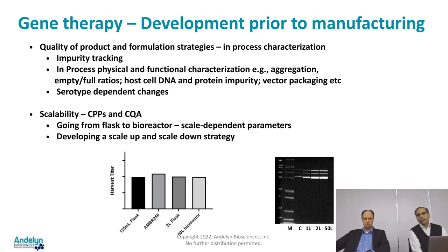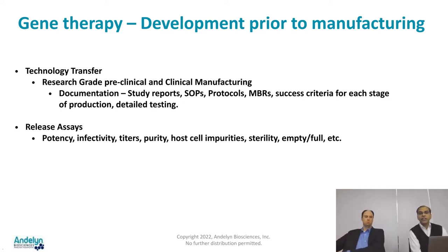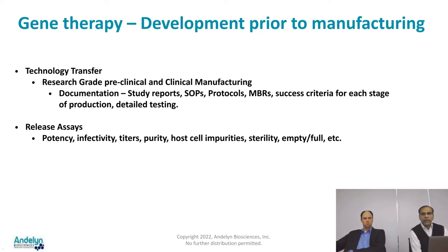Tech transfer is a huge landmark for any company — it is the step that signals readiness to go to manufacturing, whether research-grade, pre-clinical, or clinical manufacturing. Associated with tech transfer is a large amount of documentation: all study reports, protocols, SOPs, master batch records, success criteria for each stage of production, and detailed testing requirements. The manufacturing division then follows this documentation to produce the product, and the development side assesses whether that production was successful based on the established success criteria.